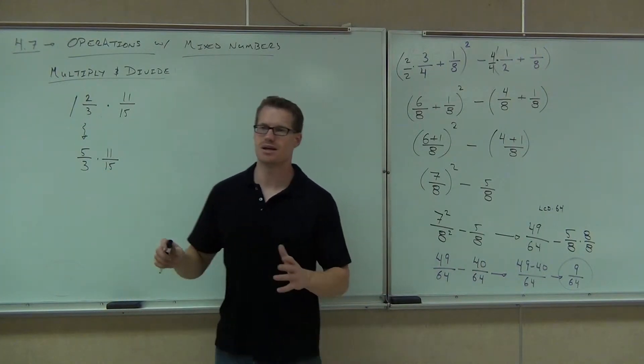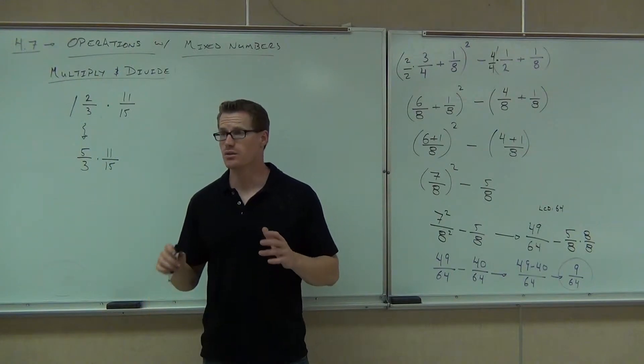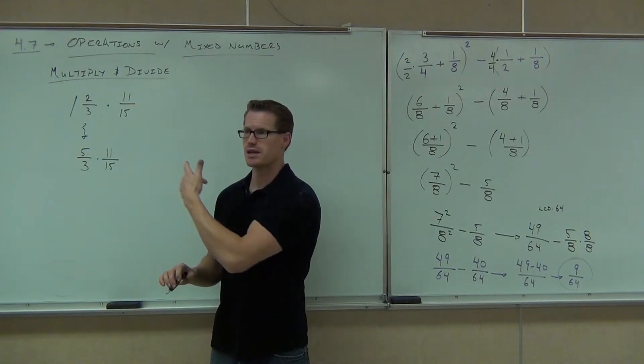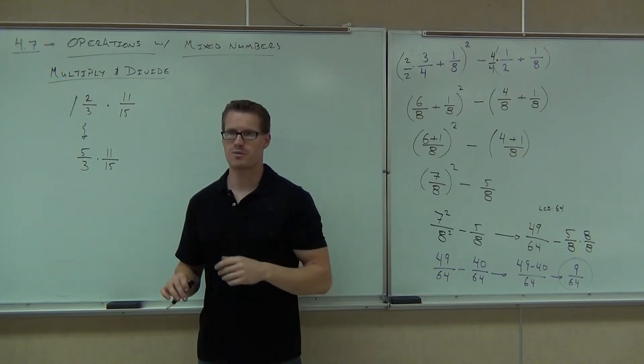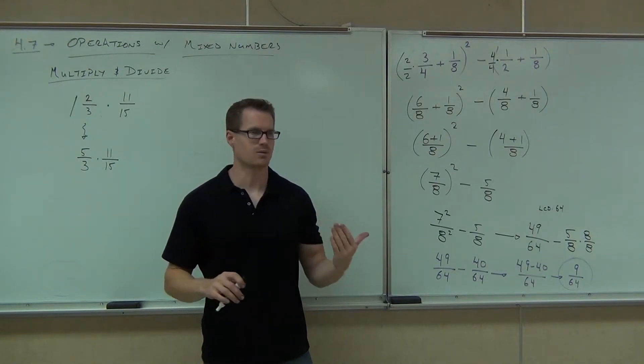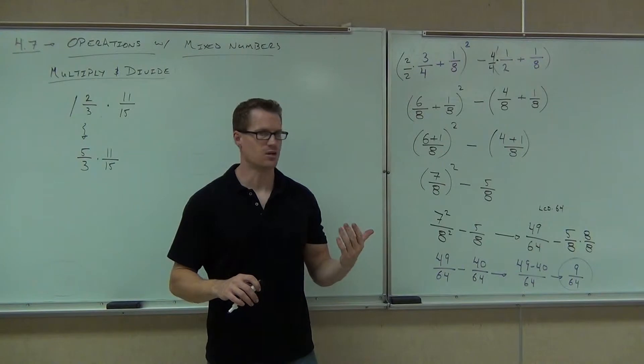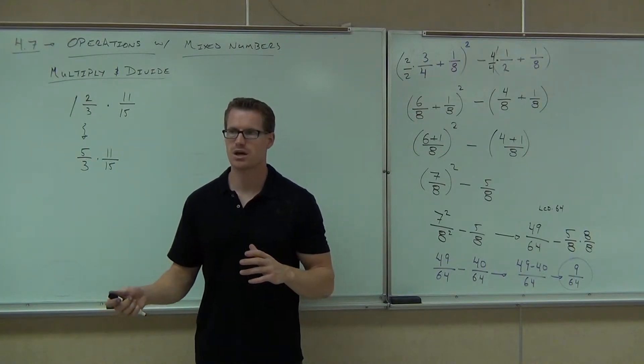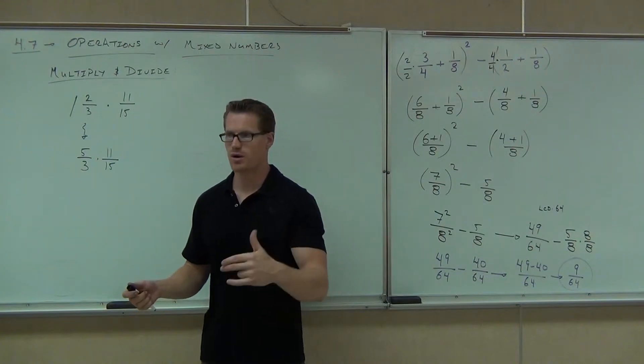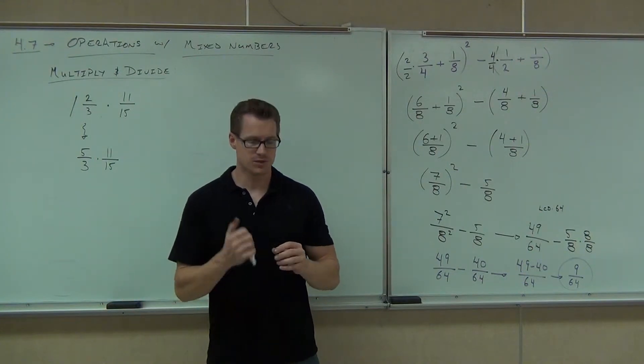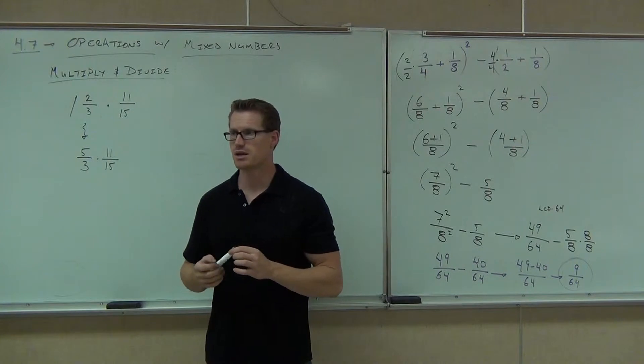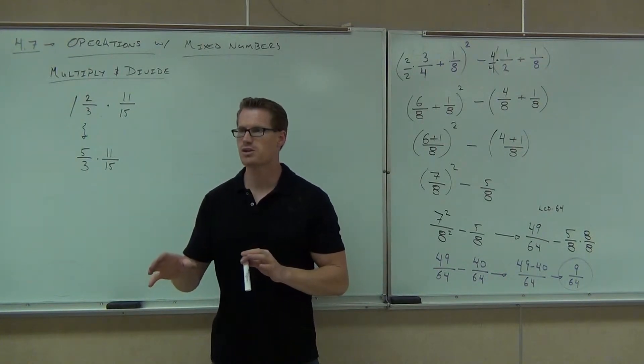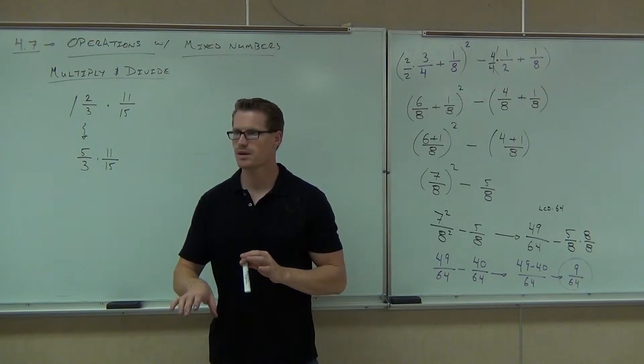So, basically, this is kind of nice about this section. Literally, the only thing that I'm teaching you in this section is that you're supposed to convert mixed numbers to improper fractions and then do exactly the same thing we've done in the last six sections. That's all we're going to do. Convert. Anytime you see a mixed number in this class, you're going to convert that to an improper fraction.